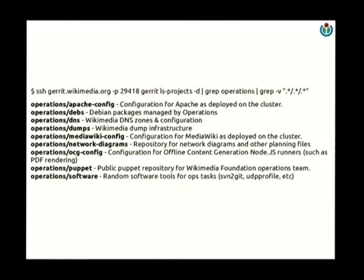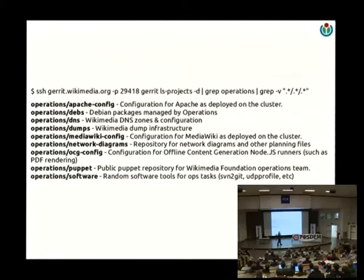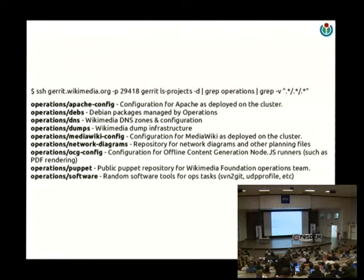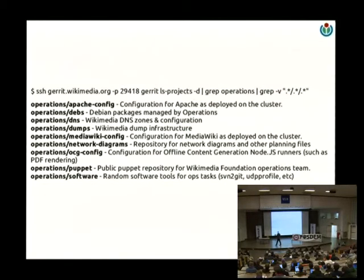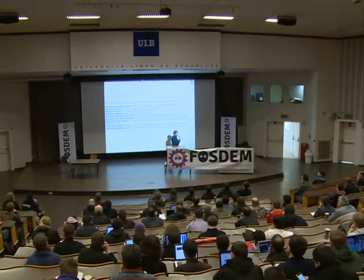We use something called Gerrit, which is an open code review tool that also functions as our Git repository for all the code. For those of you who came in late, bit.do/devlinks has all the links to get started. Within our Git repo, you find various repositories for the operations side of things — of course MediaWiki and everything associated with that, but also our Apache config, our DNS config, our Debian packages, and our entire Puppet configuration. So if you're interested in the infrastructure side of things, you can get involved in that as well. You can submit change sets, and you can reuse our Puppet configs for your own purposes or learn from them.